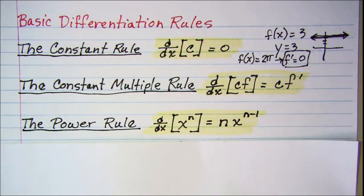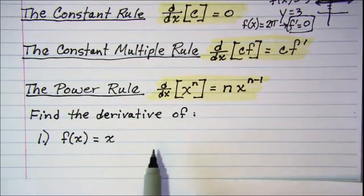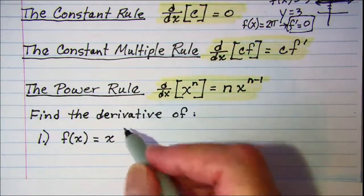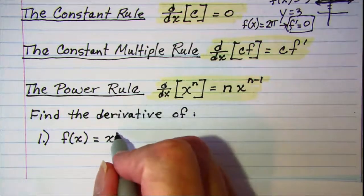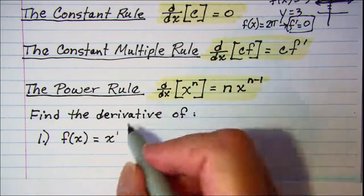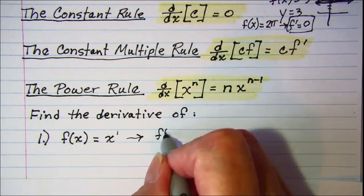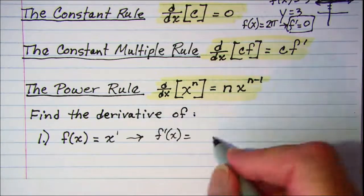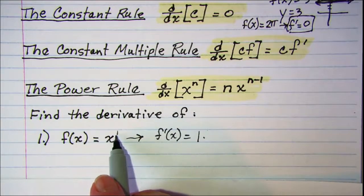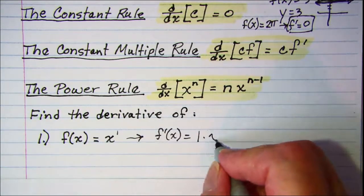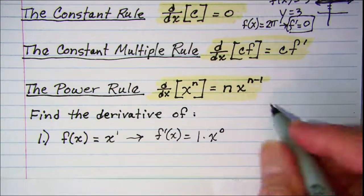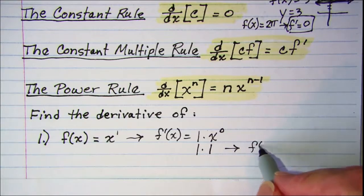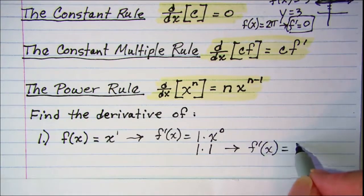Let's do some examples. Find the derivative of f(x) = x. We can use the power rule on this — this is the same as x to the first power. So for our derivative, bring the exponent out in front and reduce the exponent by 1. We now have 1 times x to the 0. Well, x to the 0 is 1, so my derivative is equal to 1.